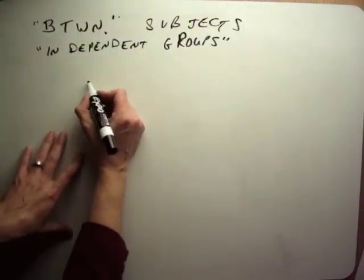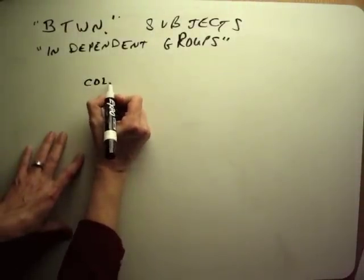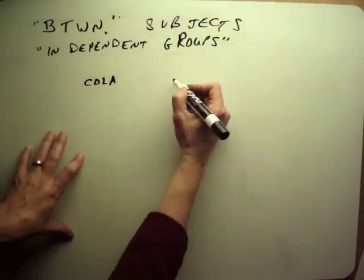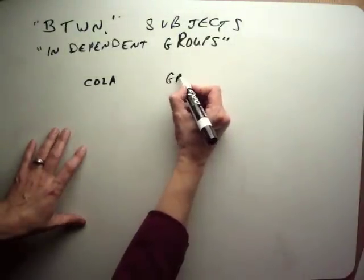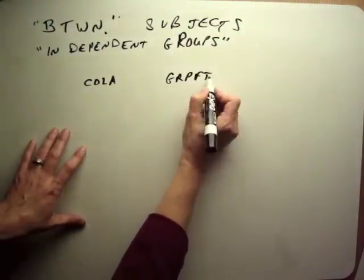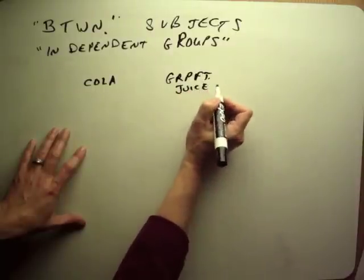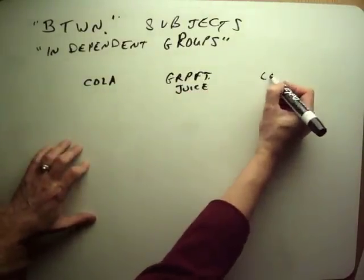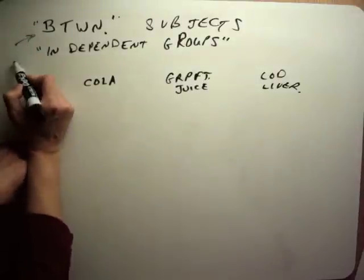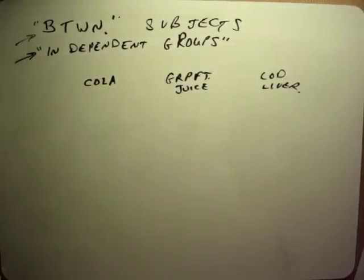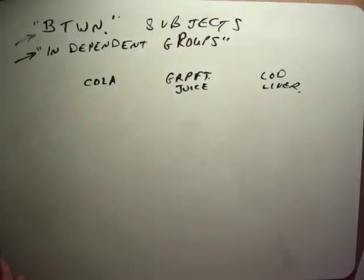In the example we did in class: some people sip cola and say how much they like it on a 0-to-10 scale; some people sip grapefruit juice and rate that; and other people sip cod liver oil. It's called a between-subjects or independent groups design because each person is in each group only once and nobody gets more than one treatment.